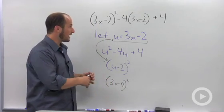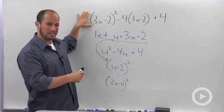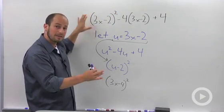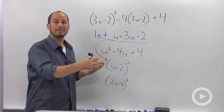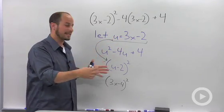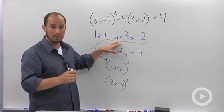So factoring a fairly ugly thing by making a substitution makes for life easier. Like I said, you could foil all this out if you wanted to, but it's going to be a lot harder, and you're more likely to make mistakes than if you just make a simple substitution.